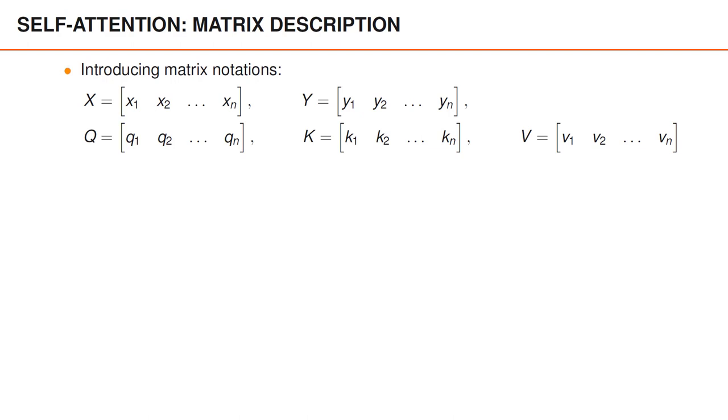Now we have already described the complete equations for self-attention. However it's useful to also know how to write these using matrix notation. These equations might be slightly less intuitive but they are far more compact and definitely preferable when you want to implement these algorithms. The first thing we need to do is to introduce matrix notations.